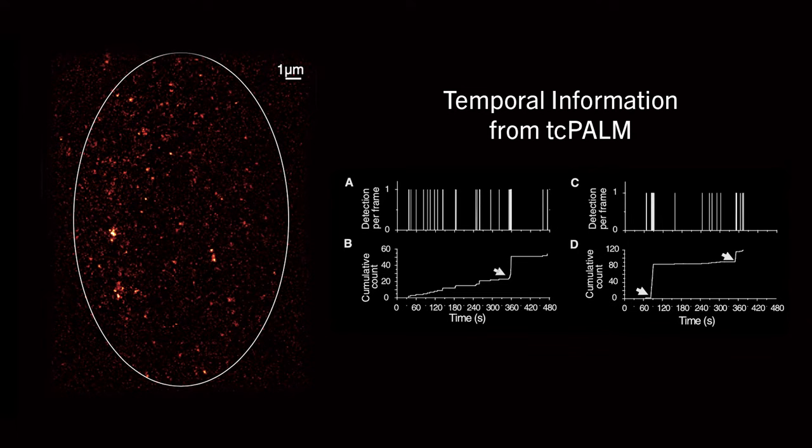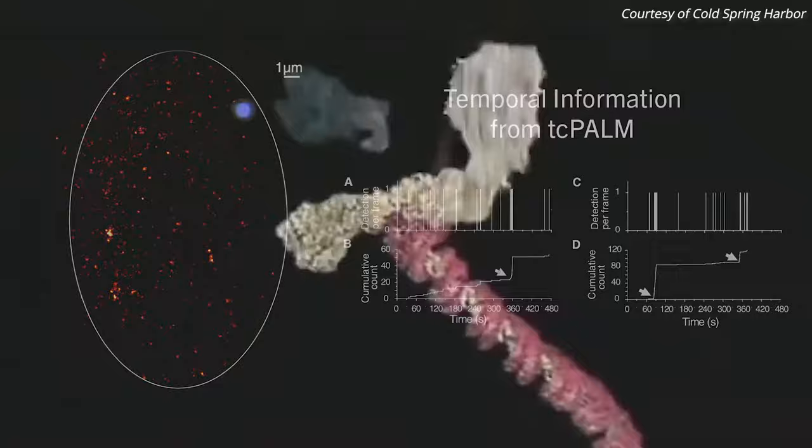We can capitalize on the temporal information already existing in the data to infer on the dynamics of the assembly and disassembly of living substructures. And that is what led to the discovery of transient RNA polymerase 2 clusters in mammalian cells.